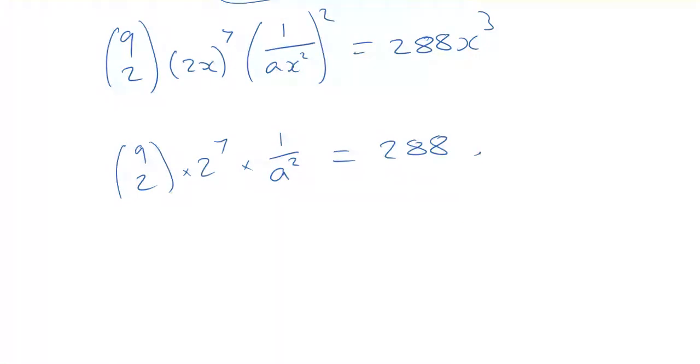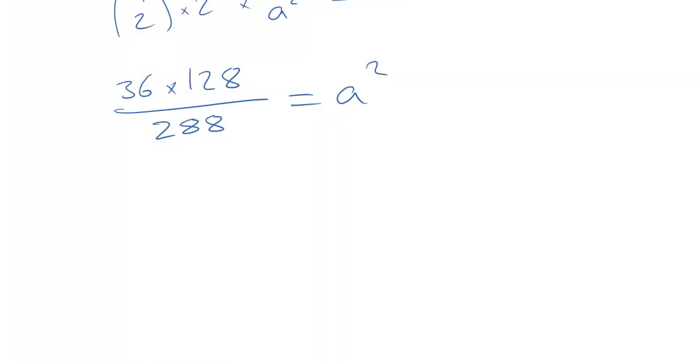Right. So if we start working some stuff out now, well, 9 choose 2 on your calculator you can find is 36. 2 to the power of 7 is 128. And how about at this stage, we multiply both sides by a squared and divide both sides by 288. And then we could work out an expression for a squared. So I can do that now on my calculator. If I work out 36 times 128 divided by 288, that comes out at 16, which is a good one because it's a square number, which means that a is 4.